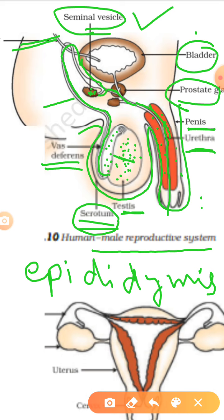Sperms are flagellated and need a fluid medium to swim. This fluid medium is provided by the secretions of the seminal vesicles and the prostate gland. The material which comes out through the urethra is called semen. Semen is the mixture of sperms and the secretions of seminal vesicles and prostate gland.